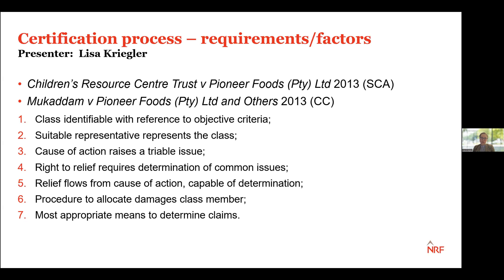How does it actually work? Very simply, all class actions take place in two parts. There is the initial certification stage, done by way of application proceedings — usually referred to as the certification application. And then, if and only if that class action is certified, will the actual class action proceed. What do our courts look at when they consider an application for certification? On screen is the Children's Resource Center Trust versus Pioneer Foods case, where our Supreme Court of Appeal set out various requirements that had to be satisfied before a court would grant certification.